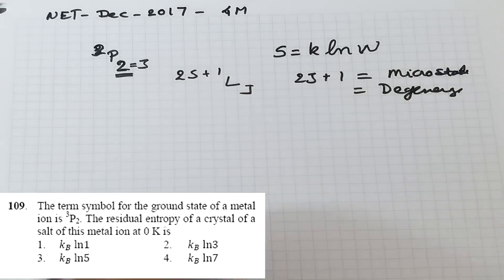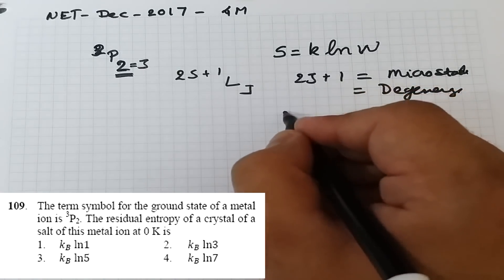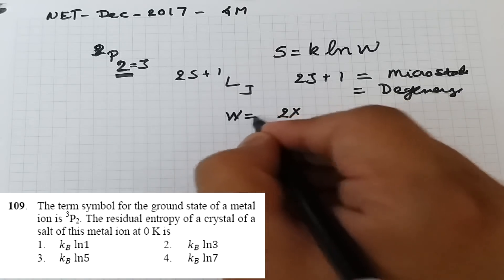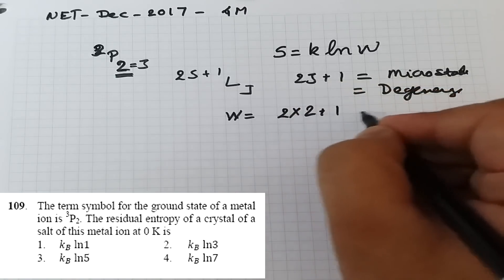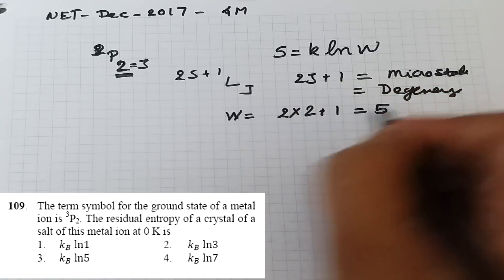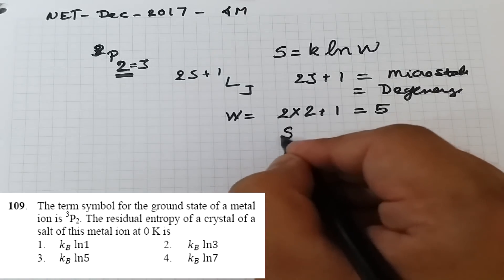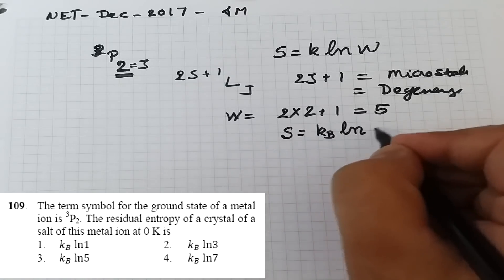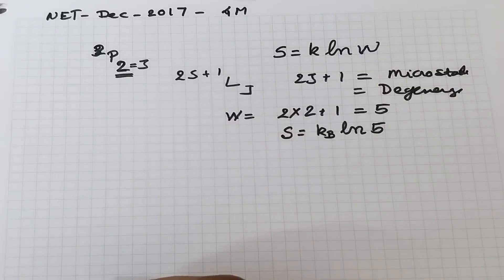The term symbol is ³P₂, so J = 2. Substituting into 2J + 1: W = 2(2) + 1 = 5. Therefore the residual entropy is S = k_B ln 5. Option number 3 is the correct answer — a very simple question once you know how to extract W from the term symbol.